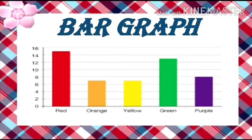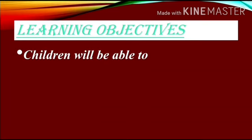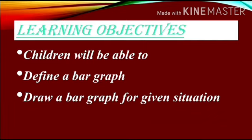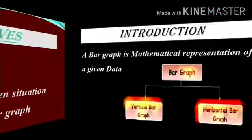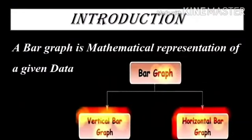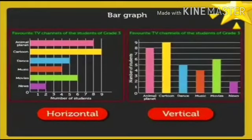Today our topic is bar graph. Learning objectives: children will be able to define a bar graph, draw a bar graph for a given situation, and interpret the data of a bar graph. A bar graph is the mathematical representation of given data. There are two types of bar graph: vertical bar graph and horizontal bar graph.